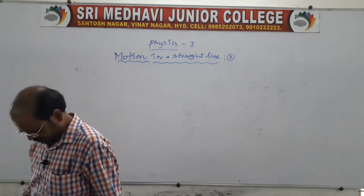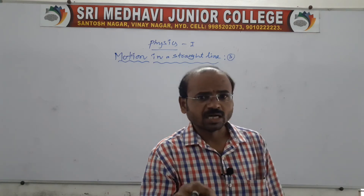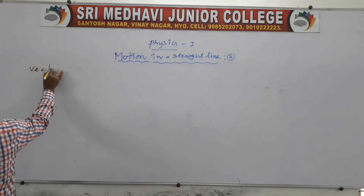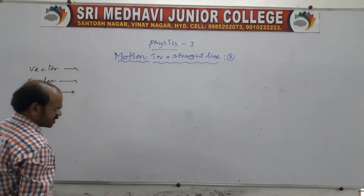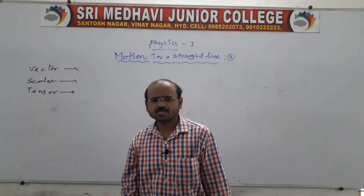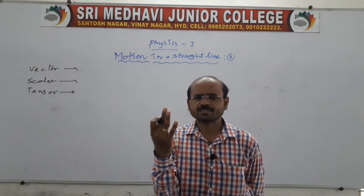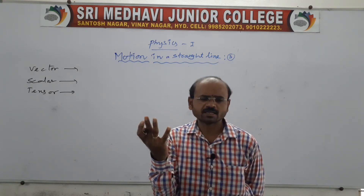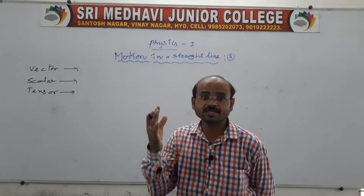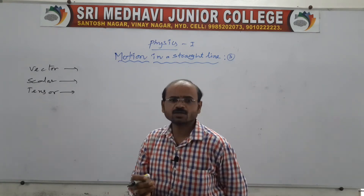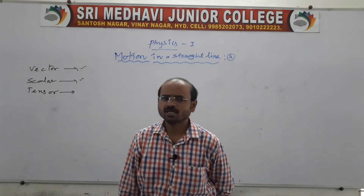Before moving further, we should know about vectors and scalars and tensors. We have a number of physical quantities like distance, displacement, velocity, area, volume, force, work, surface tension, pressure, linear momentum, angular momentum, and torque. All physical quantities are classified into three groups based on their magnitude and direction: vector, scalar, and tensor.